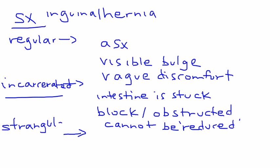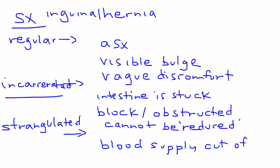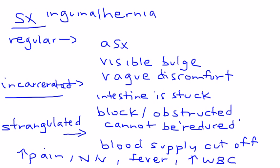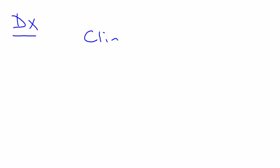The most worrisome is a strangulated hernia, which means the blood supply is cut off. If the blood supply is cut off, the patient presents with increasing pain, nausea and vomiting, fever, and an elevated white blood cell count, indicating infection or perforation. Diagnosis is primarily clinical.